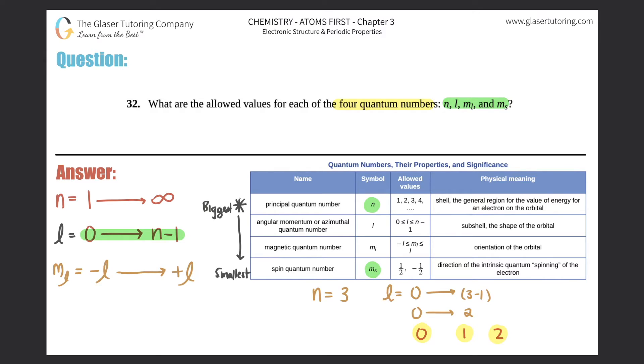For this one, the ml for zero would be technically negative zero all the way to positive zero, but that doesn't really make sense, so in this case the ml would just be zero. For the second one, it would be ml of negative one all the way to positive one, so that would be negative one, zero, and one. So there would be three ml values for your l equals one.